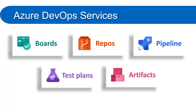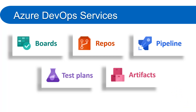In Repos you can use TFS or Git repositories, manage your code, create branches, create multiple repositories in your project, and use all the features available from Git. Then we have Pipelines, which is related to the deployment of your code — all tasks, automation processes, and CI/CD everything is available in Pipelines.